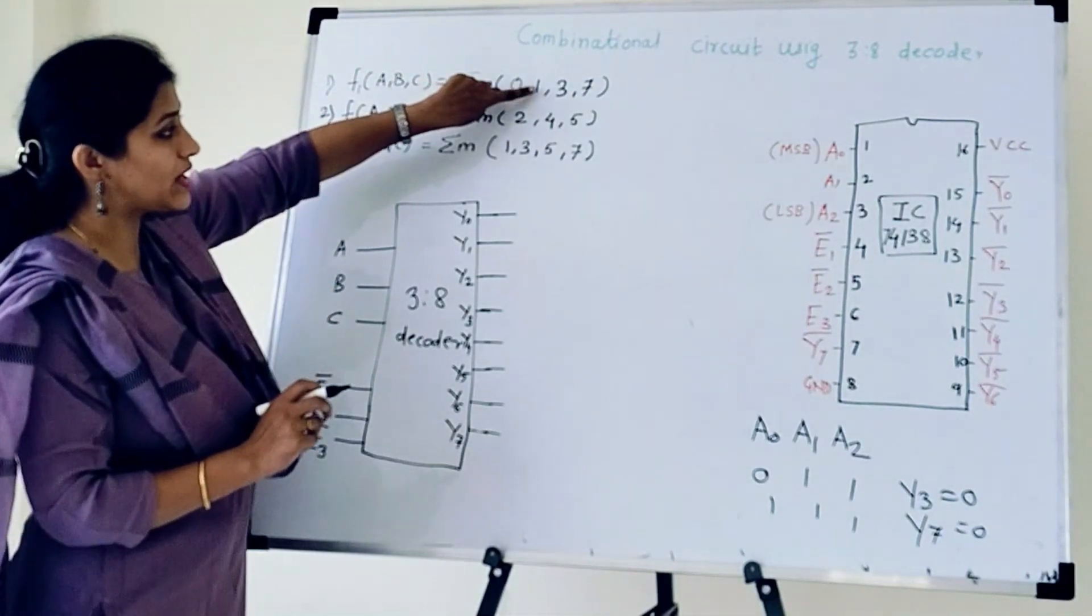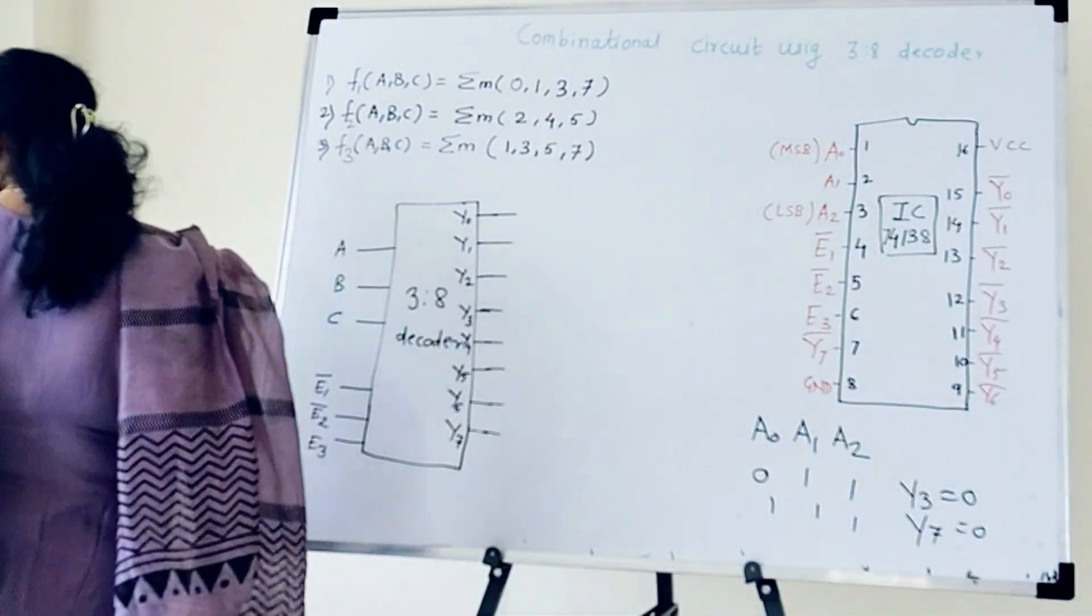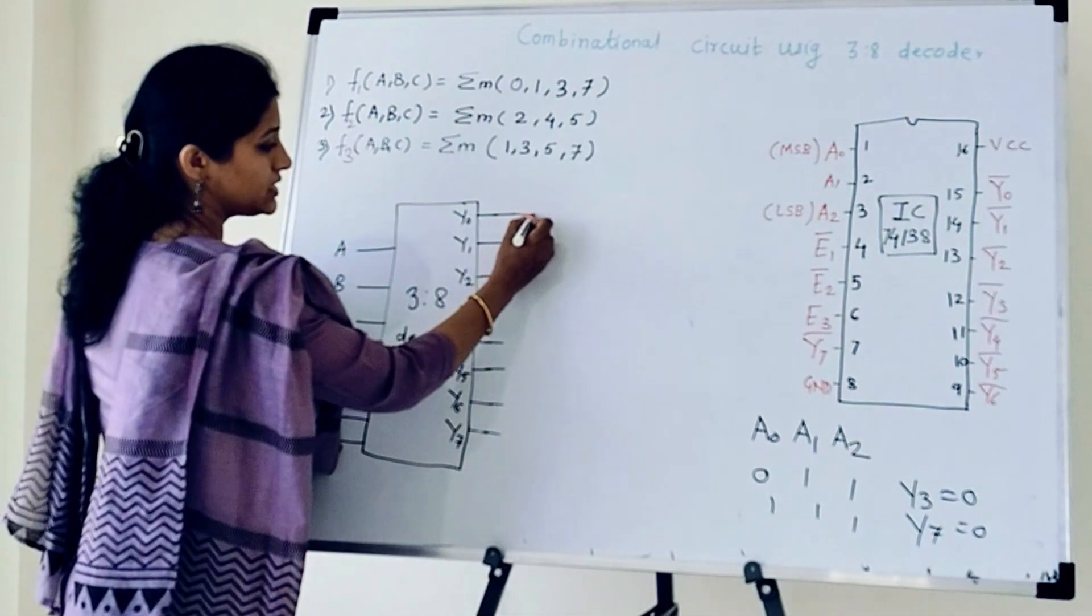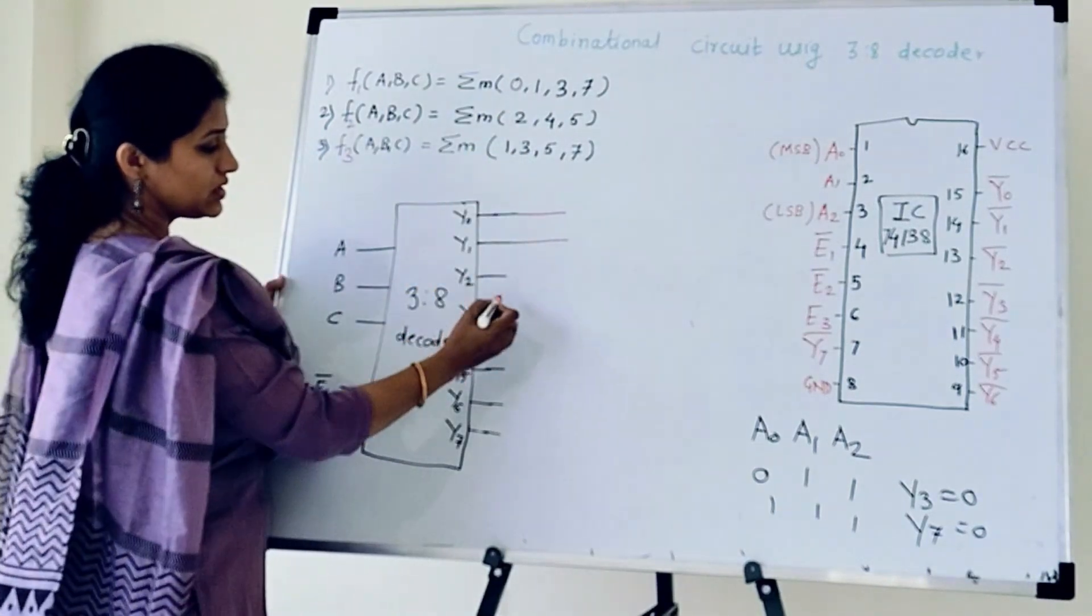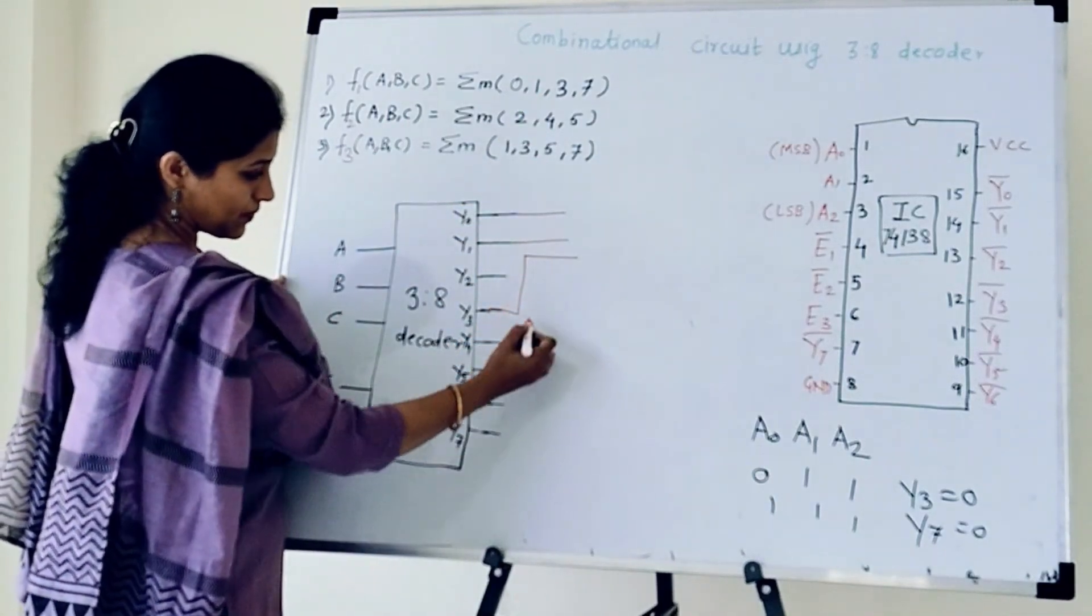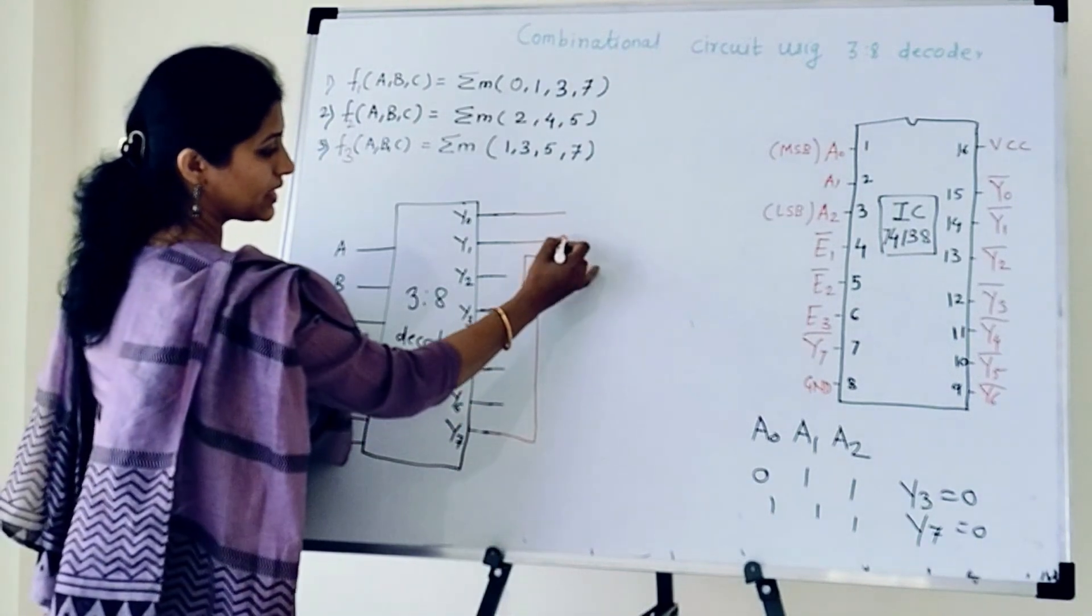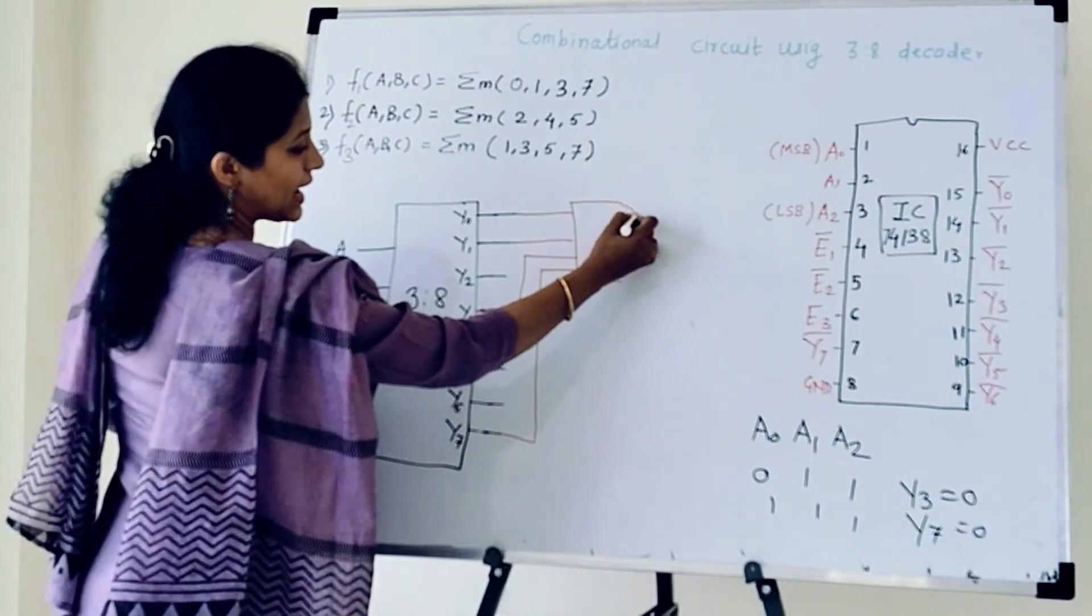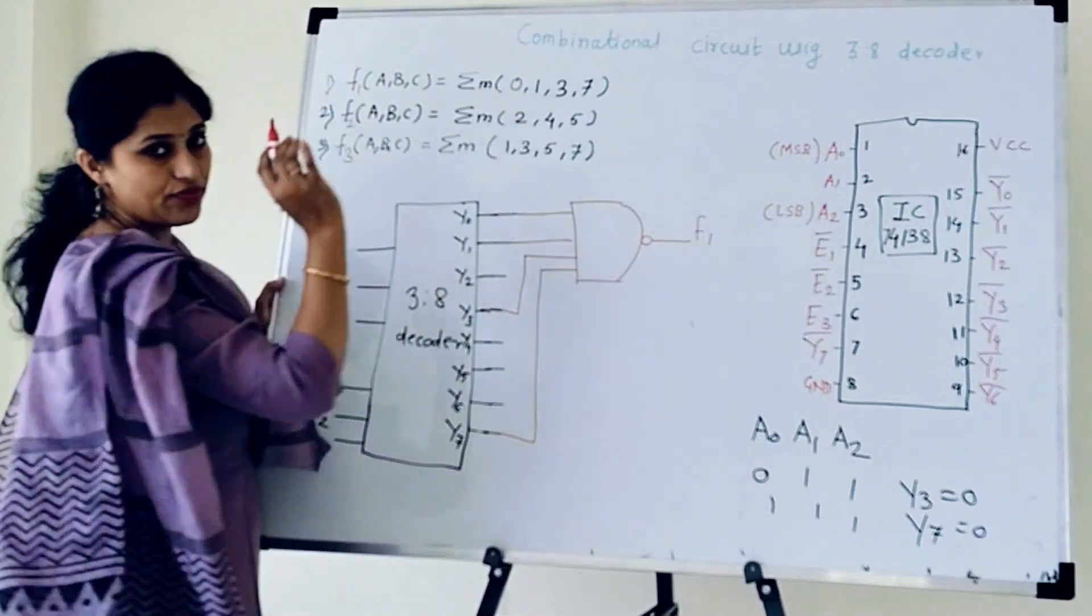So here I have 0, 1, 3, 7. So I will select Y0, my Y0. Second is Y1. So I will select Y1. Then 3, Y3 and Y7. And I will connect these outputs to the input of NAND gate. And here I will get F1.